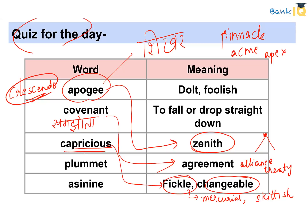The word 'Plummet' is used when something falls down with great speed. Synonyms include drop, crash, skid, decline, and descent. To fall or drop straight down is to plummet.